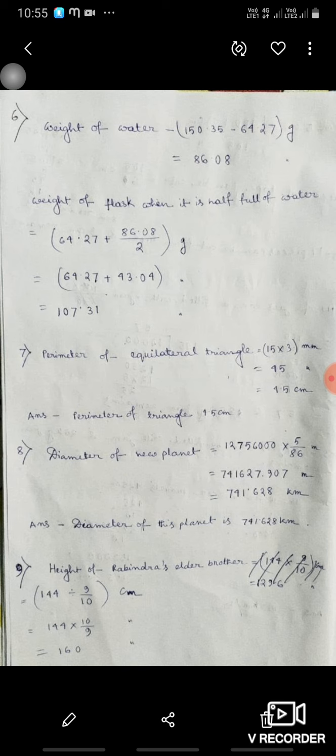Sixth, weight of water. So 150.35 minus 64.27 is equal to 86.08. Weight of tank when it is half full of water.